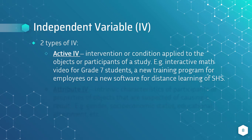The active IV is an intervention or condition applied to the objects or participants of a study. For example, an interactive math video for grade 7 students, a new training program for employees, or a new software for distance learning of senior high school students. These are active independent variables since they have a direct effect on the dependent variables.